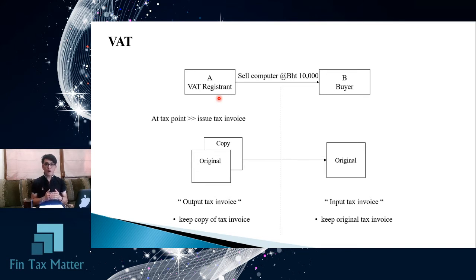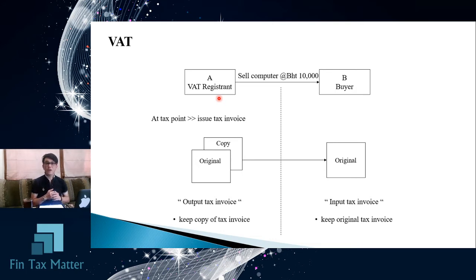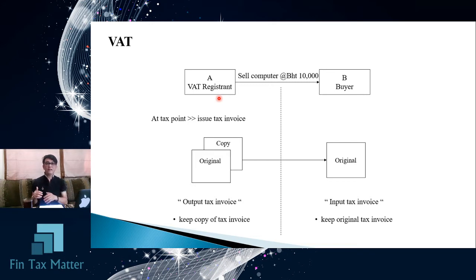For seller A, when they give the original to the buyer, A keeps the copy. This copy is called the output tax invoice. A has the duty to keep this copy and use it to prepare the output VAT report. For B, when B receives the original, it is used for claiming the input tax. B, as a registered buyer, is required to prepare the input tax report and keep the original as evidence for proving the amount and summarizing the input tax report.